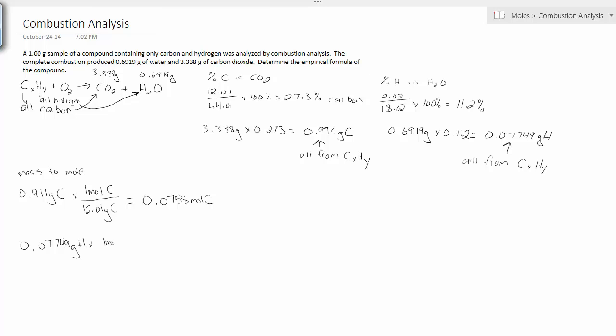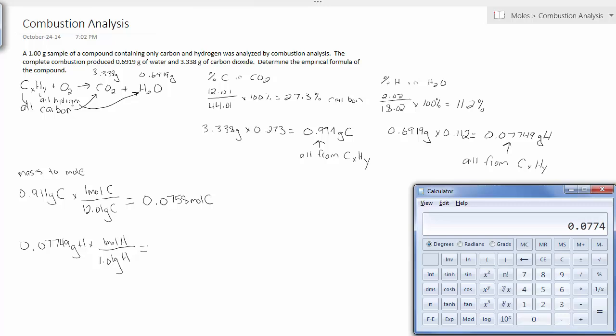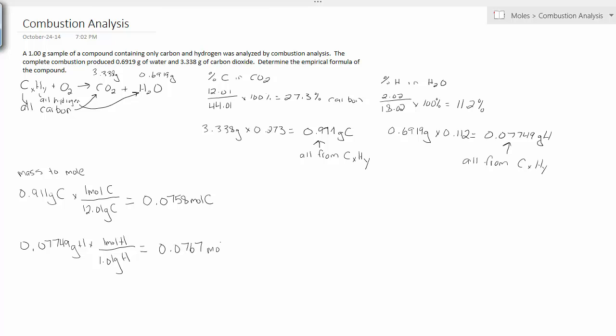So 0.0758 moles of carbon. I'm going to convert hydrogen to moles as well now: 0.0767 moles. You can probably see right away these are about the same value. So when I divide them each by 0.0758, I'm essentially going to get 1. And we'll divide this and say this is approximately 1. So there is no need for a multiply till whole step because they're both already whole numbers. The empirical formula is CH.